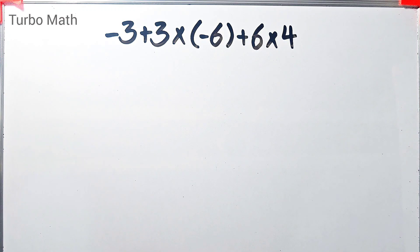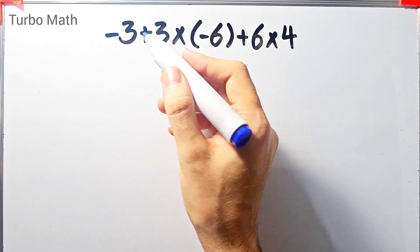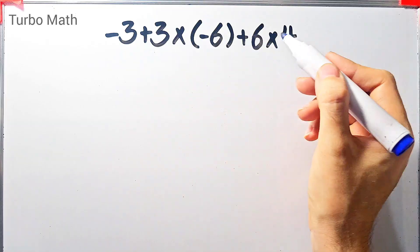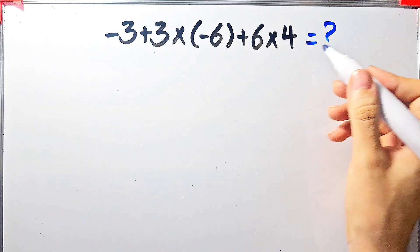What is the value of this expression? Hi friends and welcome to TurboMask Channel. Negative 3 plus 3 times negative 6 plus 6 times 4. What is the answer of this question? Can you solve it?